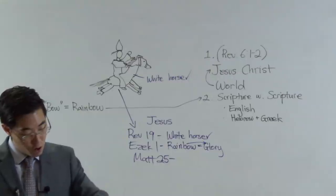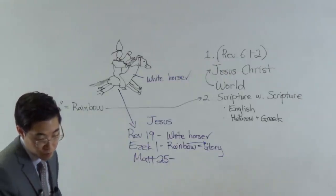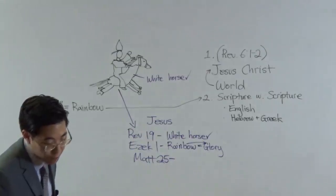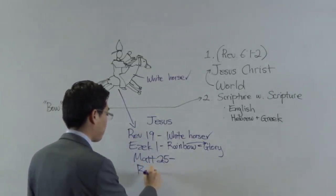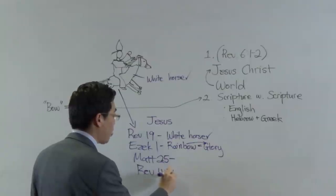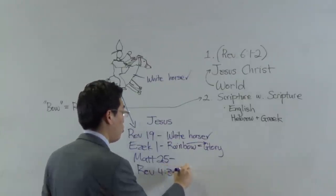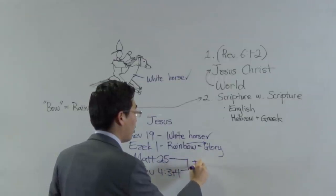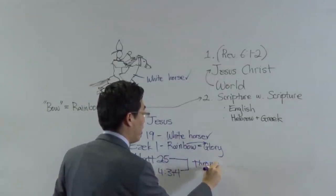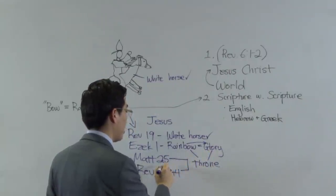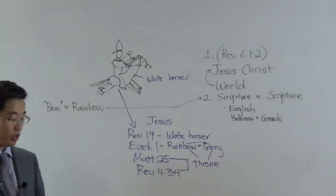Revelation 4, verse 3 and 4. Notice, surrounding the throne is the rainbow. Throne is rainbow. Not only that, throne of His glory. The Bible shows that He's going to come down in His glory. So when Jesus Christ comes down, He's going to hold the colors of the rainbow with Him when He comes down.